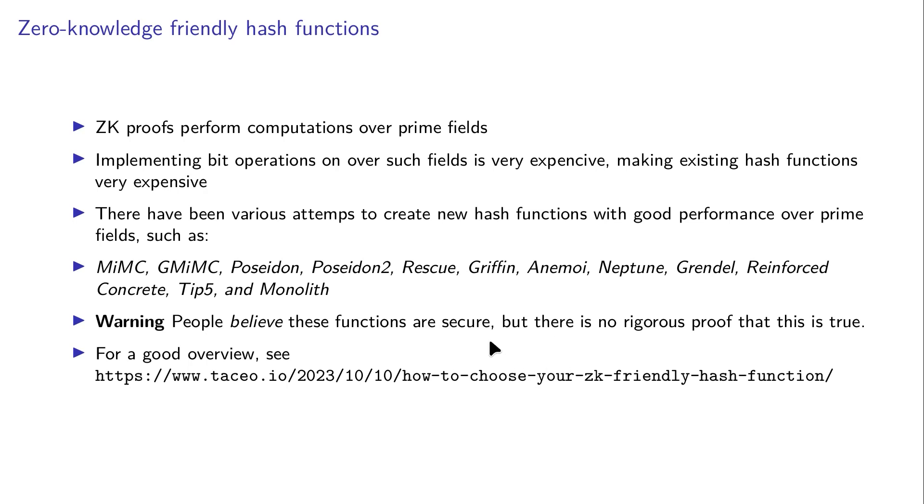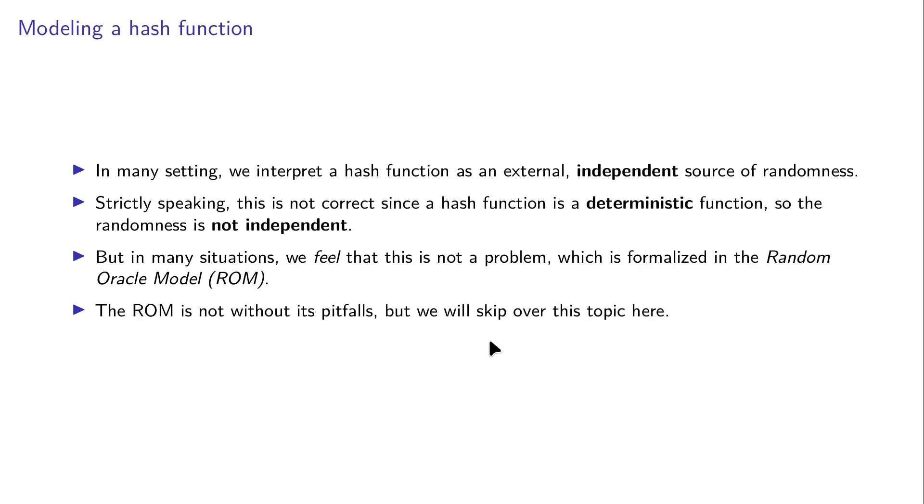I also want you to be aware of the following fact. In many settings we interpret the hash function as an external independent source of randomness. Strictly speaking that is not correct since the hash function we have is deterministic, so the randomness isn't independent. But in many situations we feel that this is not a problem, or we like to get to a proof which otherwise would be impossible.